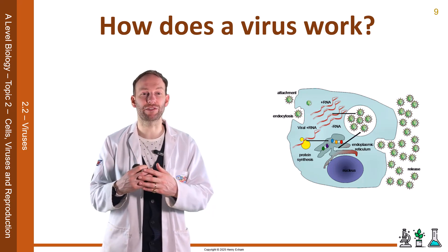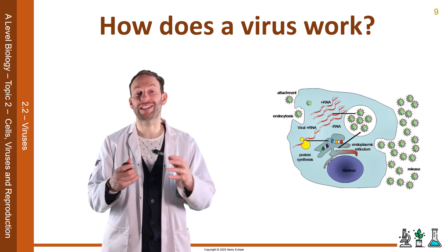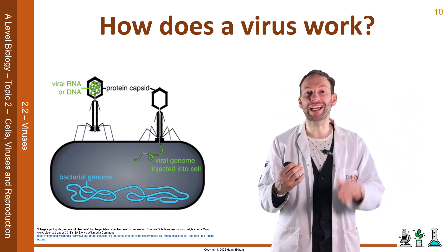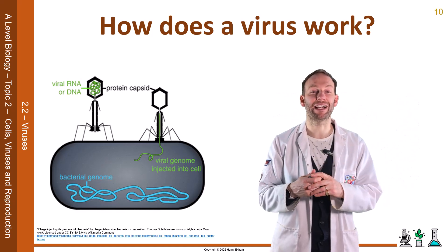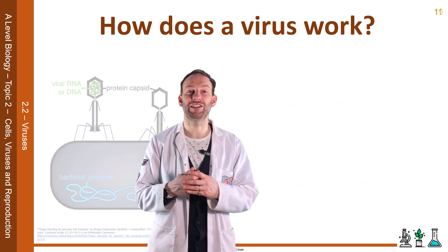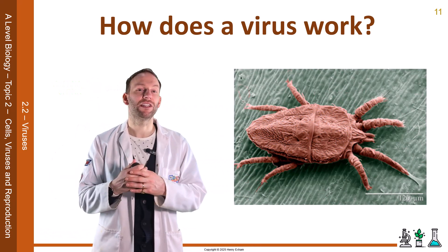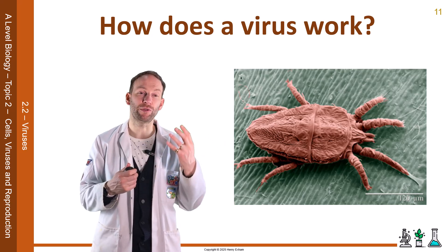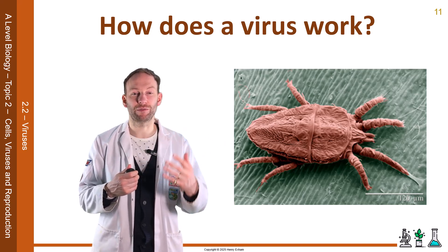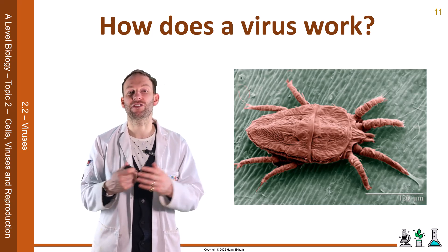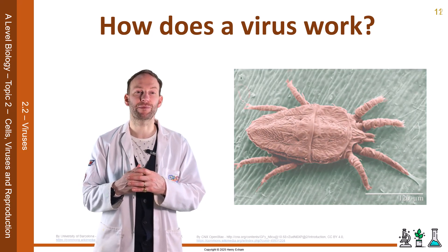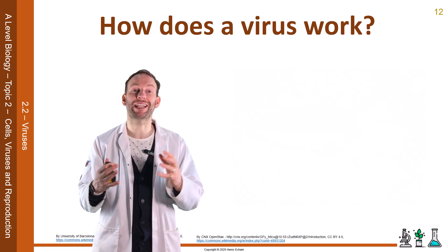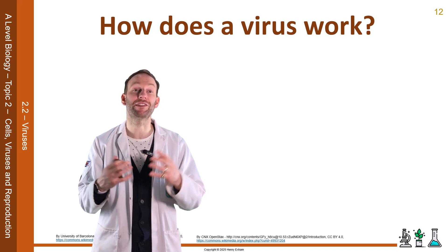Most viruses get into animal cells via endocytosis at the cell membrane. A bacteriophage injects the genome directly into a bacterial cell. Plant viruses get in using a vector, quite often an insect, which pierces the cell wall and allows the virus to enter. For example, the flat mite transmits many plant viruses, such as the coffee ring spot virus. Once inside the host cell, the virus can then take various routes to replicate itself, based on what type of virus it is.